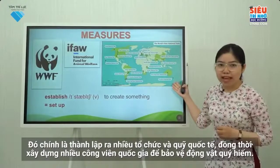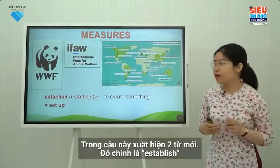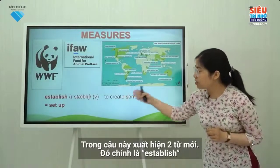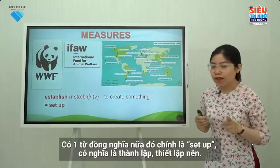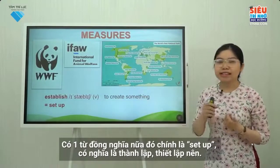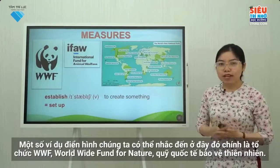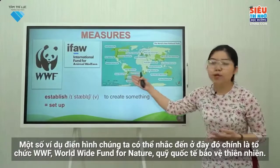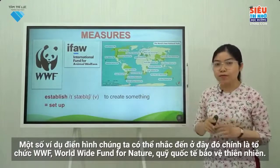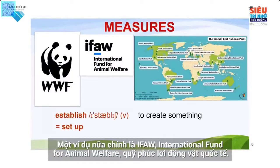Thousands of national parks all over the world have been established to protect endangered animals. In this sentence, there are two new words. First is 'establish,' which means to create something. There's a synonym: 'set up,' which means to start a new business. Examples include WWF, which means Worldwide Fund for Nature, and IFAW, which means International Fund for Animal Welfare.